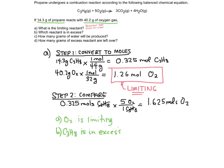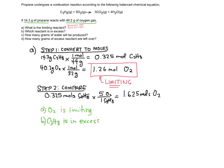Now part C asks: how many grams of water will be produced? Limiting reactant problems generally want to know how much product we can make. We take the limiting reactant — because it limits how much product we can make — and do a stoichiometry problem. The limiting reactant becomes the given quantity; I completely ignore the propane because it's in excess. So I'll take those 1.26 moles of O2 and find the grams of water produced.